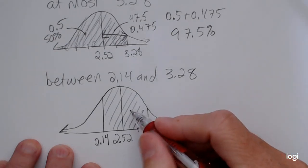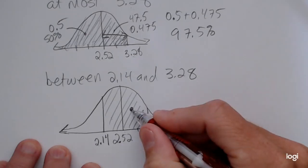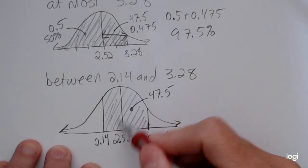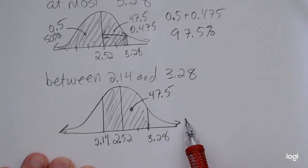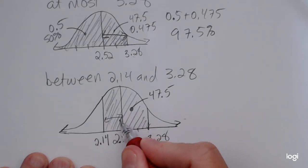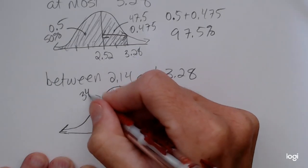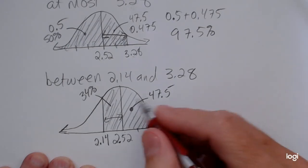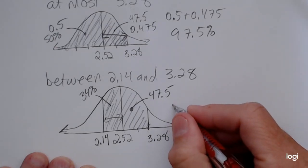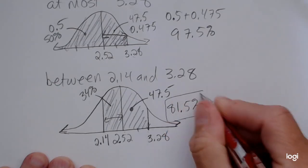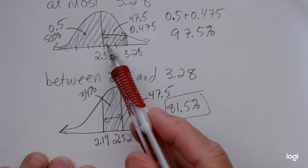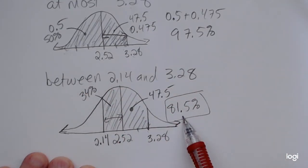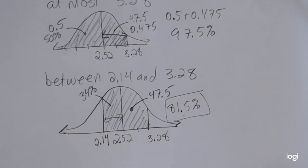I did find both separate pieces earlier. From 2.52 to 3.28, that's half of 95%, which is 47.5%. And from the 'at least 2.14' part, the area from 2.14 to the mean was 34%. Adding those together, 34% plus 47.5% equals 81.5%. Note that this would not be a percentile — a percentile is a running total from negative infinity up to a score. This is just an in-between area.